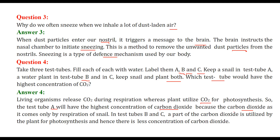The CO2 in test tube A comes only from the respiration of the snail. In test tubes B and C, a part of the carbon dioxide is utilized by the plant for photosynthesis, and hence there is less concentration of CO2 in those test tubes.